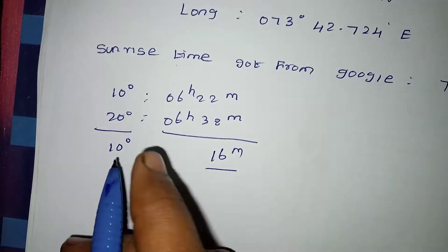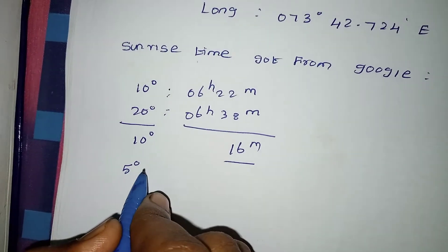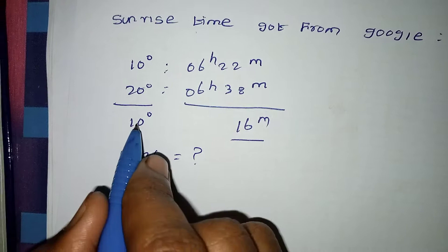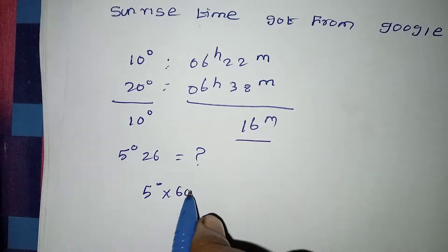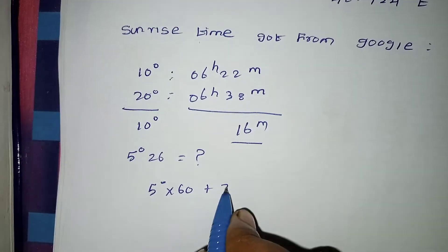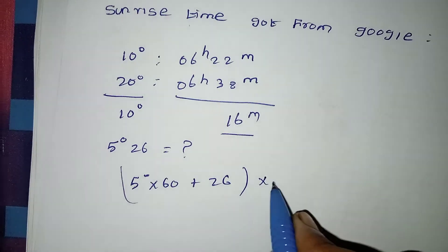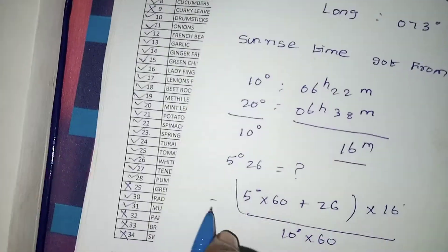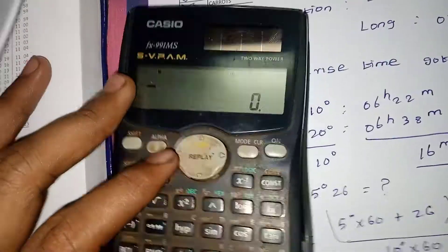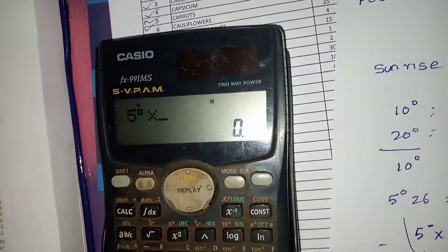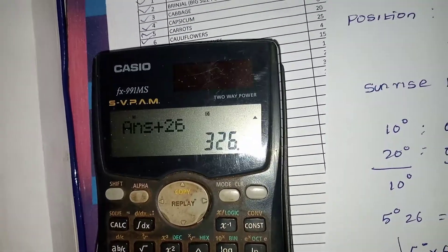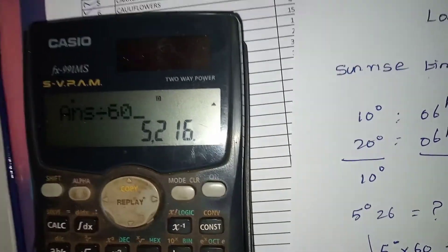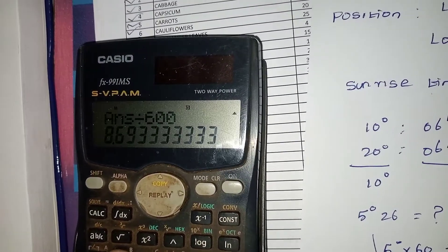Interpolation: 5 degrees 26. Interpolation — minute plus 26, into 16 minutes, divided by 10 degrees, into 60. Then 5 degrees into 60, plus 26, into 16 minutes difference, divided by 600. Result: 8 minutes.